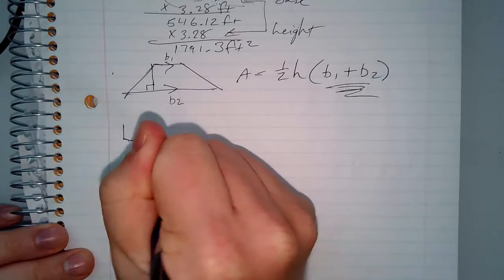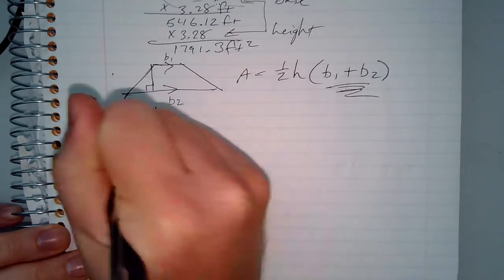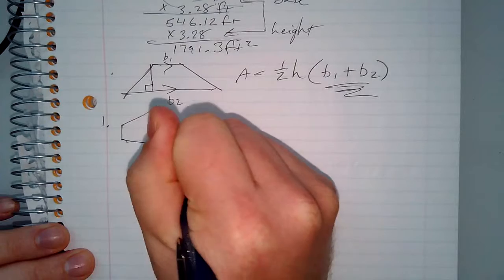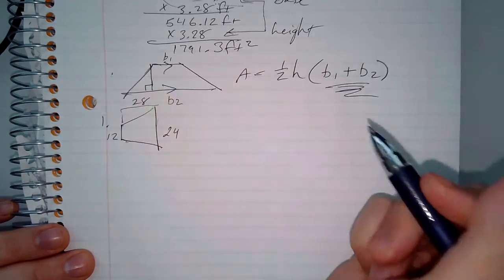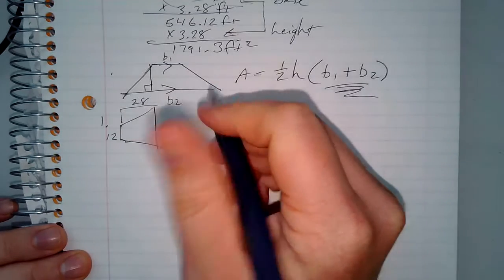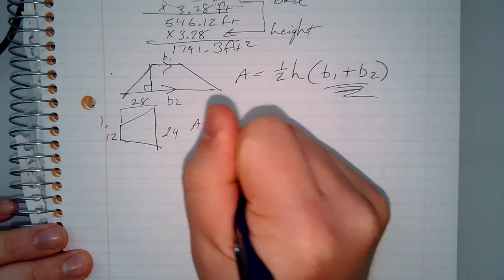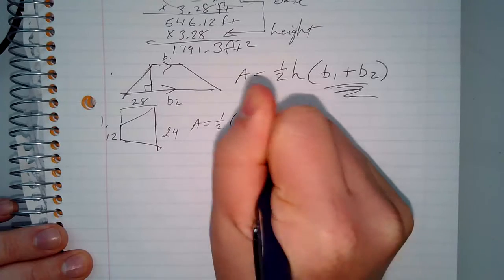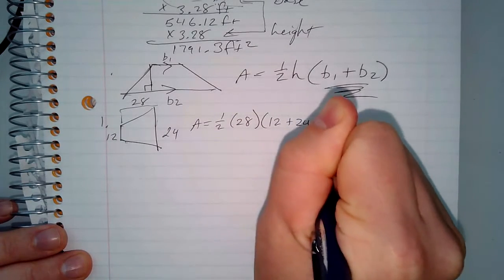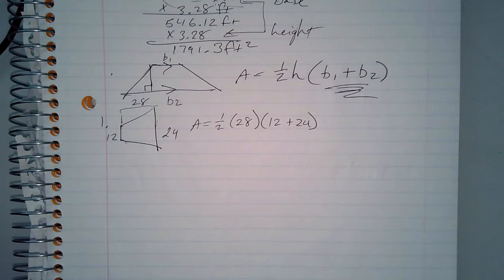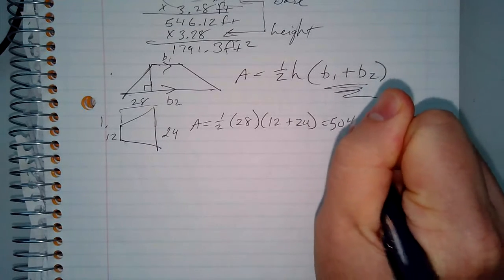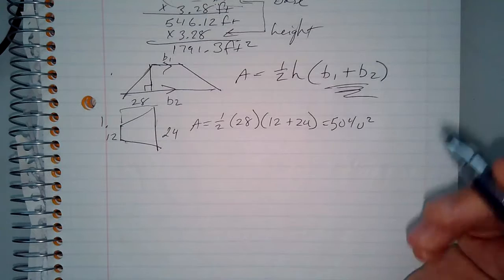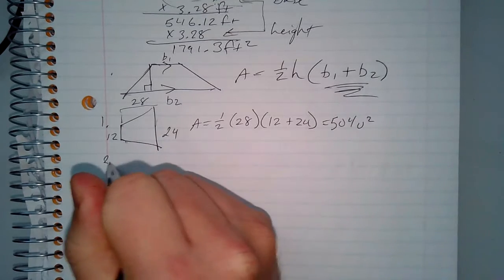This trapezoid is on its side — tricky! Number one: the base here is 24, the other base is 12, and the height is 28. Plugging in: area equals one-half times 28 times (24 plus 12). We get 504 units squared.